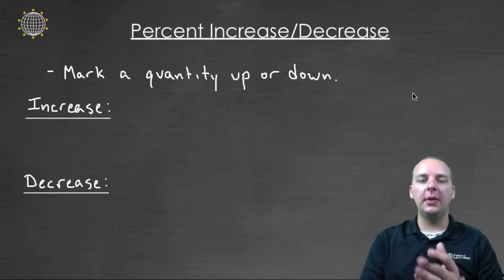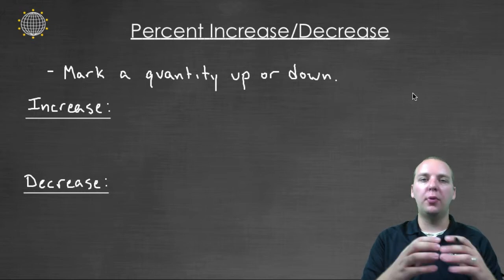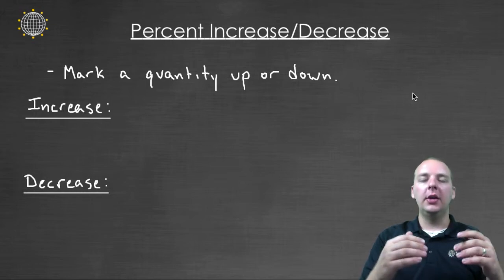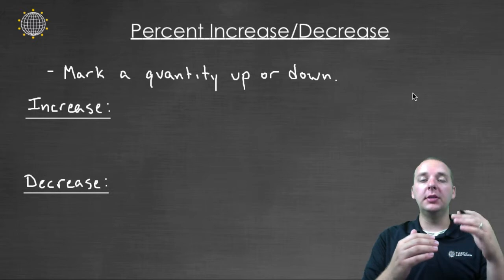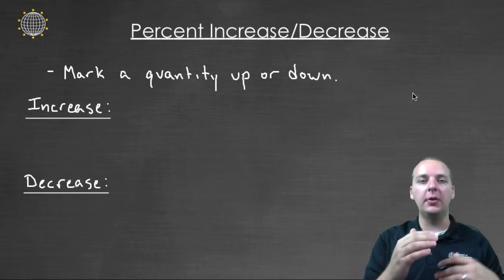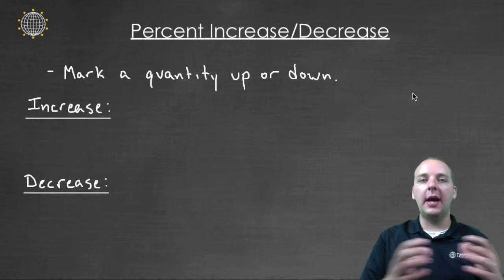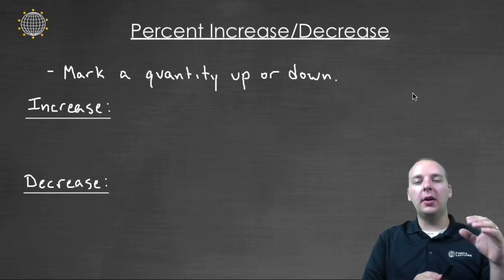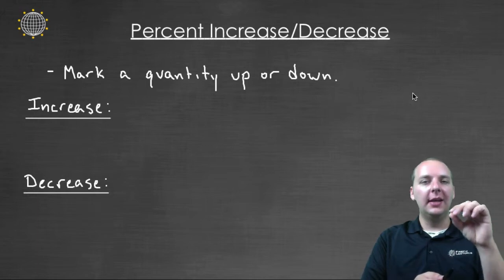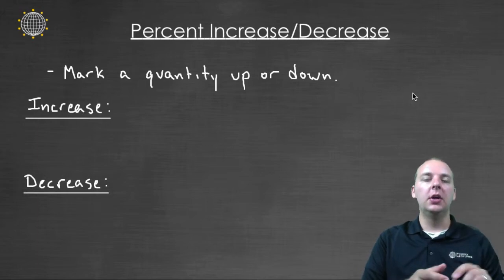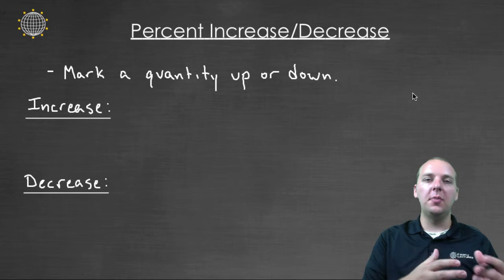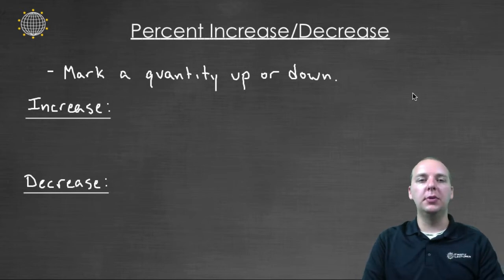A popular real life application dealing with percentages is where you have the price of a certain quantity and you mark it up a certain percentage or you mark it down a certain percentage. We see this all the time in real life — if you have an item and it's on sale twenty percent, you're marking the price of the item down a certain percentage. And there's a way that we can do this mathematically.